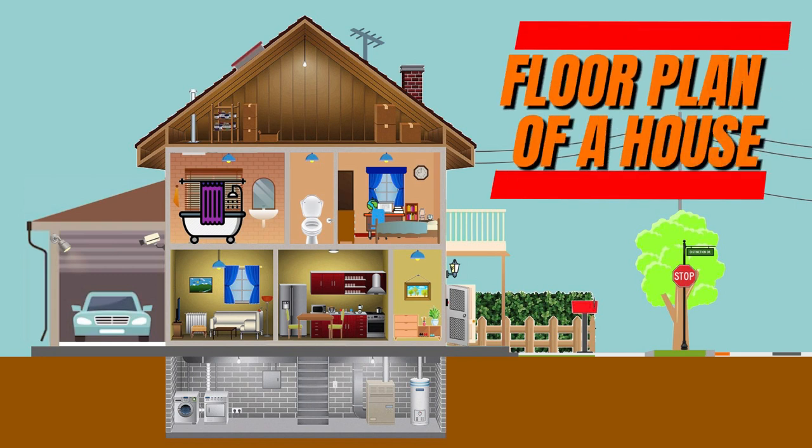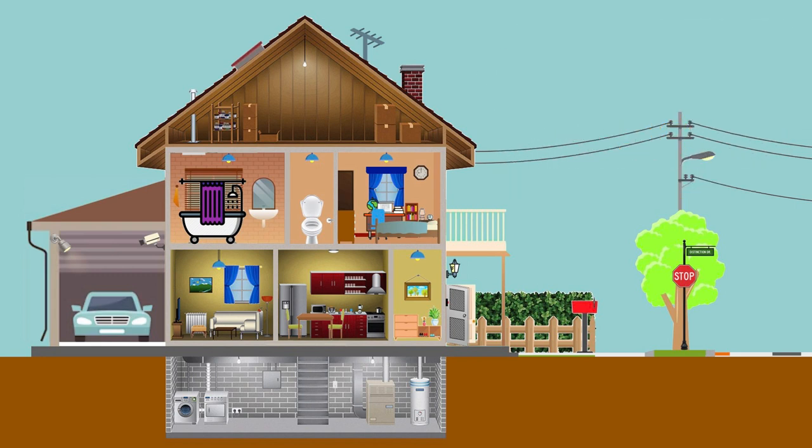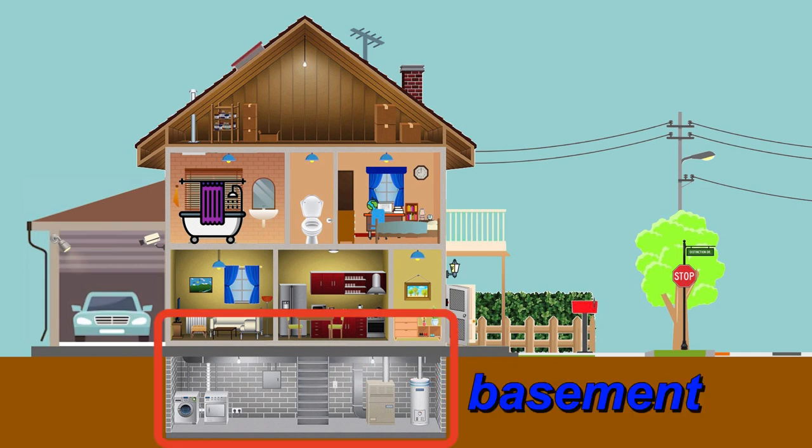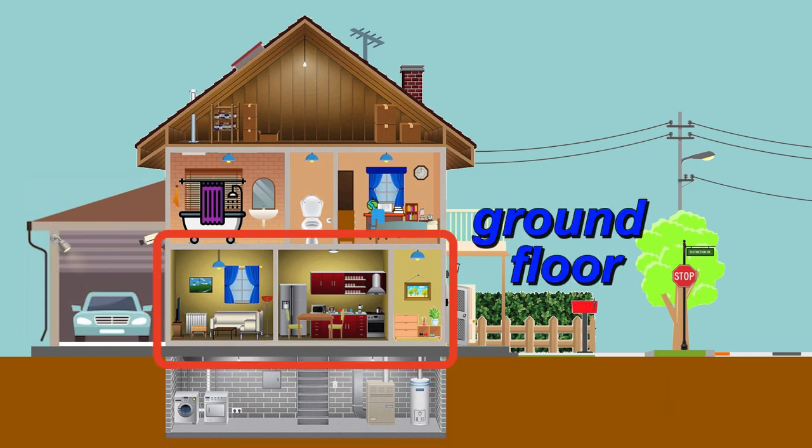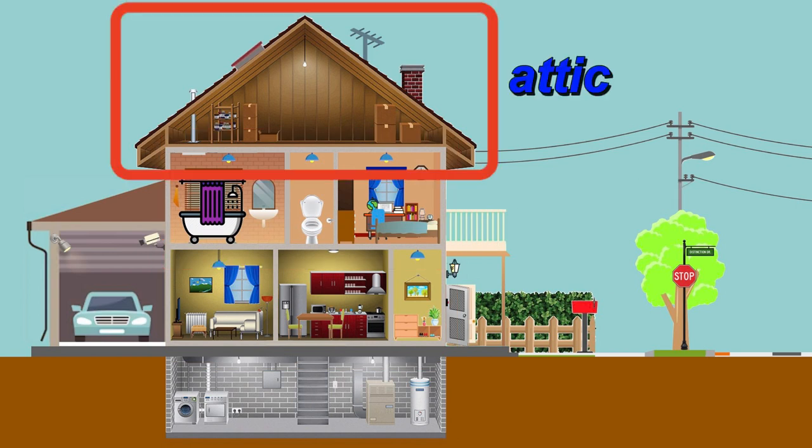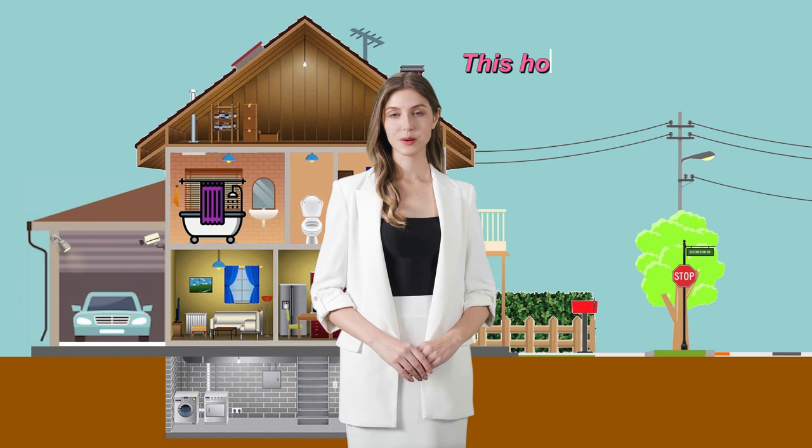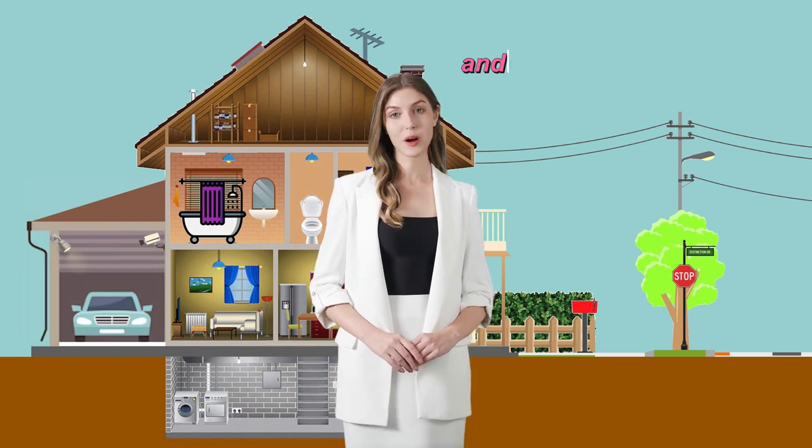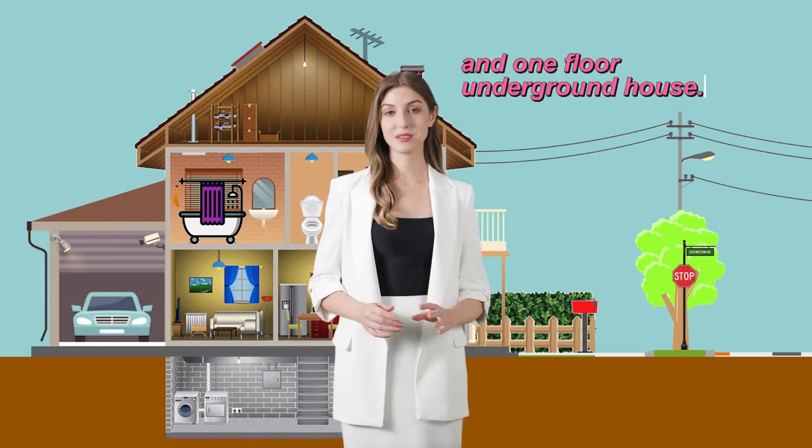Floor plan of a house: foundation, base, basement, ground floor, first floor, attic. This house is a two-story and one-floor underground house.